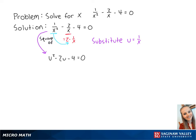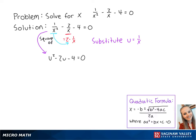The left side can't factor, so we're going to use the quadratic formula to solve for u. In this equation, a equals 1, b equals negative 2, and c equals negative 4.